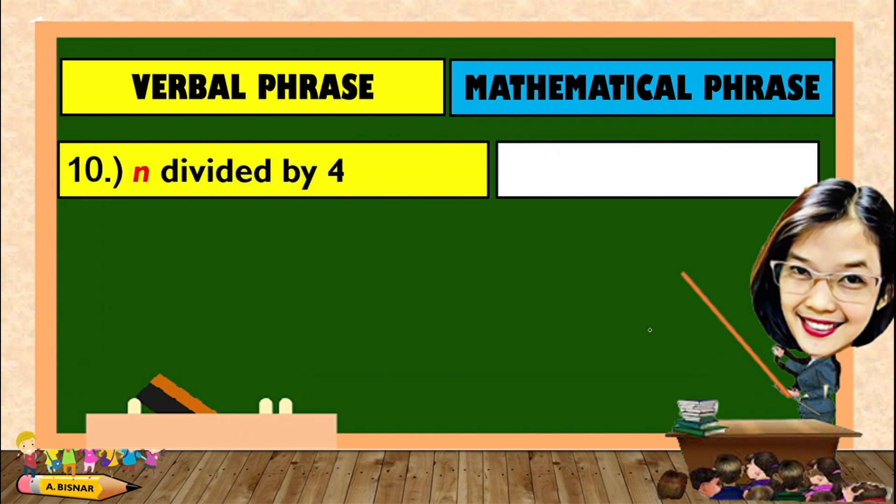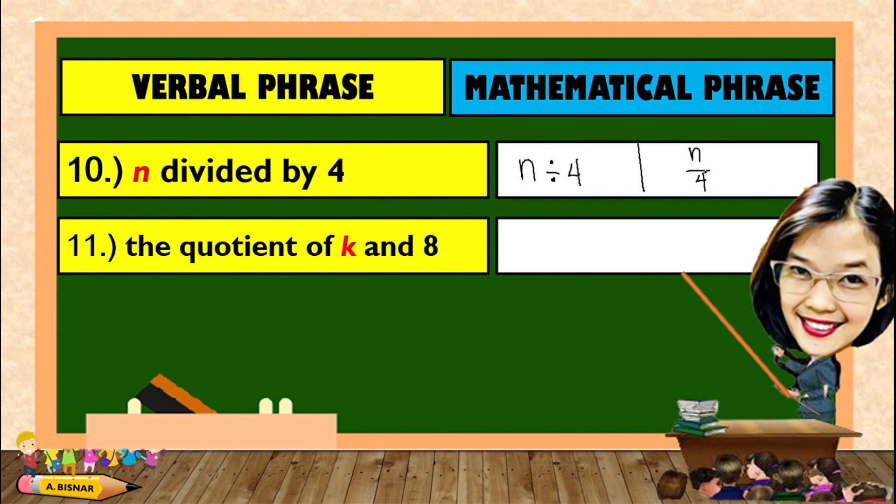For number 10, N divided by 4. N divided by 4. Well, this can also be written as N over 4. Another, the quotient of K and A. The quotient of K and A, which can also be written as K over A.